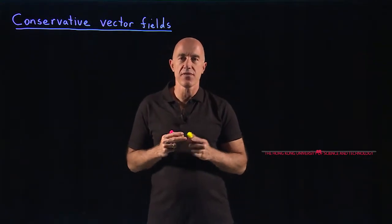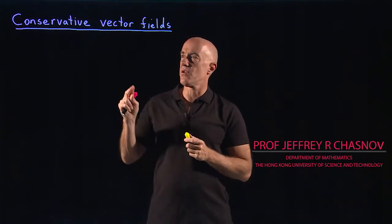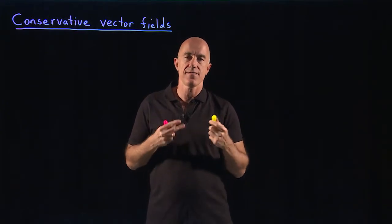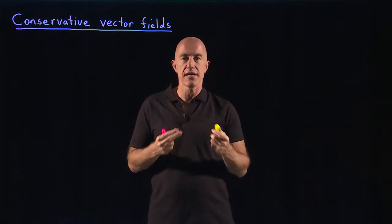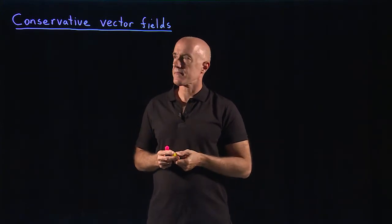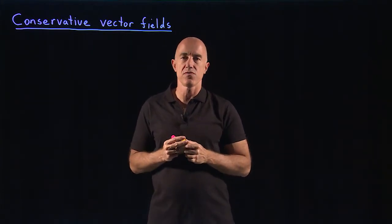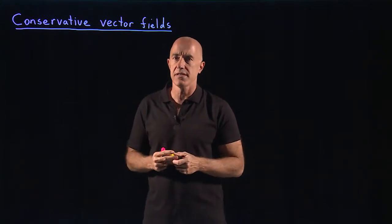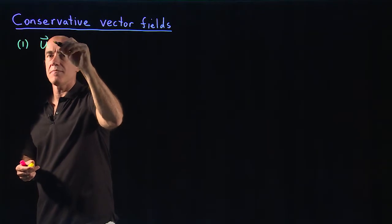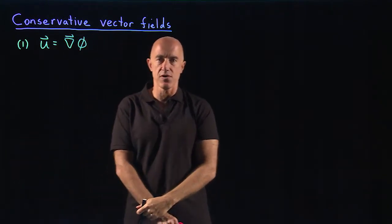In the last video, we learned about the gradient theorem. The gradient theorem is closely related to what physicists call a conservative vector field. When we wrote u equal to del phi, that phi in physics would be related to the potential energy. The u would be related to the field that the potential energy is arising from. Here, we're going to treat this as a mathematical object.